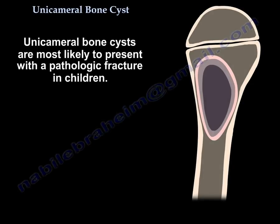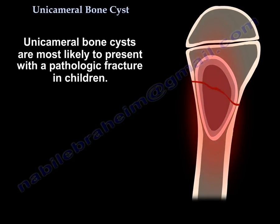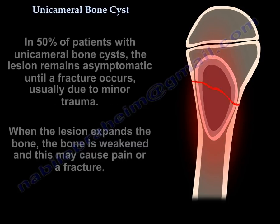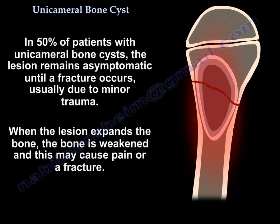Unicameral bone cysts are most likely to present with a pathologic fracture in a child. The goal of treatment is to prevent pathologic fracture. In 50% of patients, the lesion remains asymptomatic until a fracture occurs, usually from minor trauma. When the lesion expands the bone, the bone is weakened and this may cause pain or a fracture.